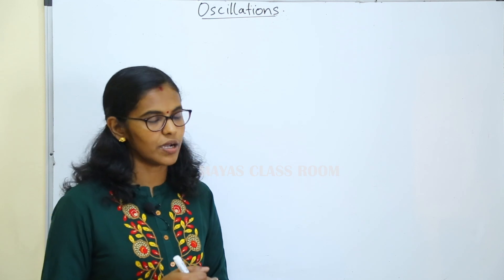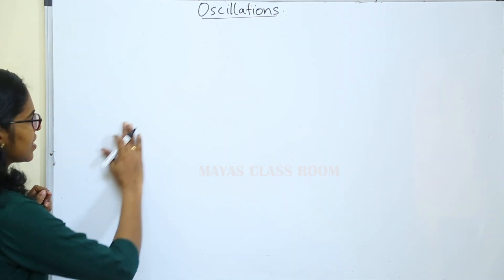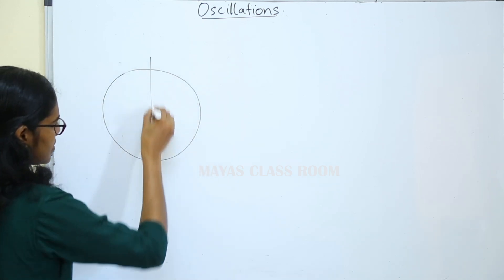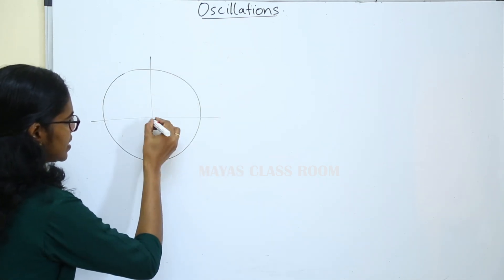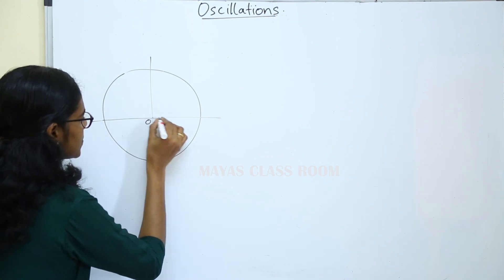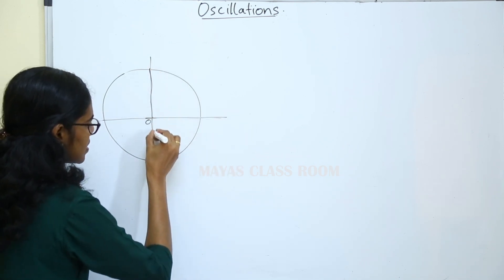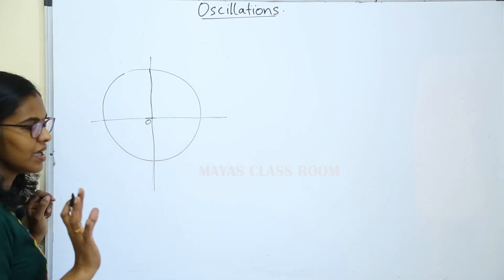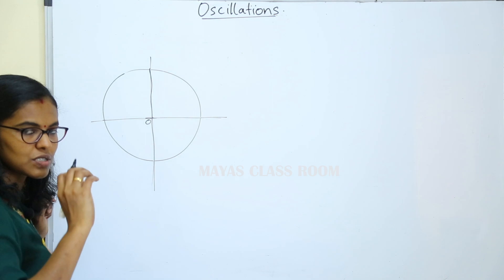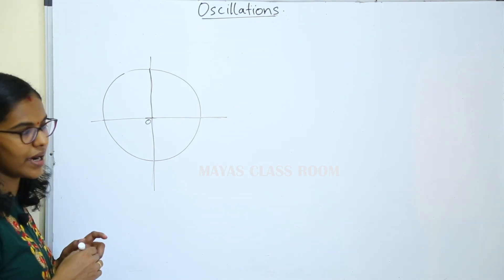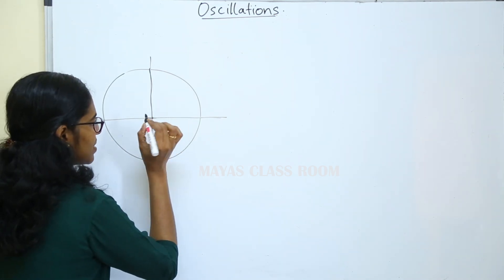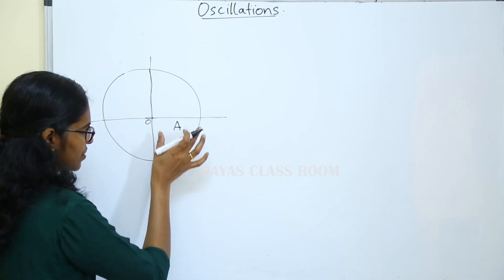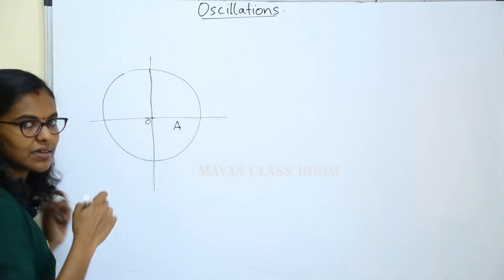We will consider the displacement relation derived from uniform circular motion. Now we will consider the circular motion. We will consider the maximum displacement amplitude. The amplitude is the maximum displacement. We consider that amplitude is equal to the radius.